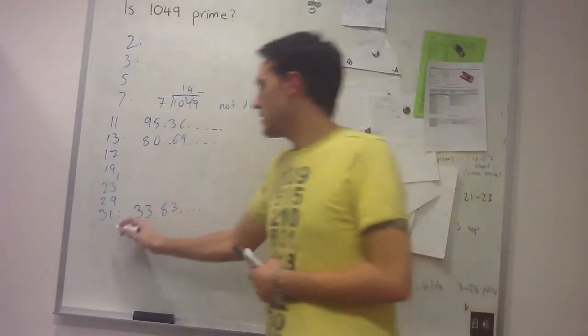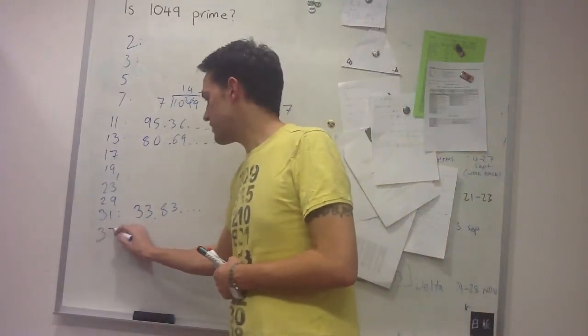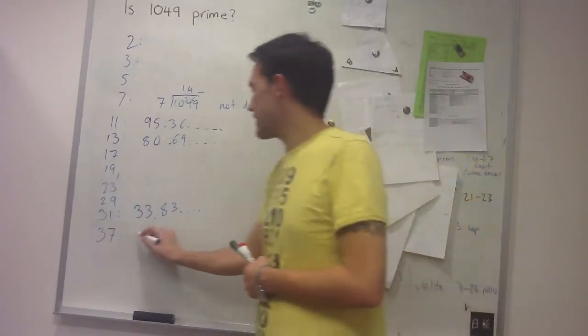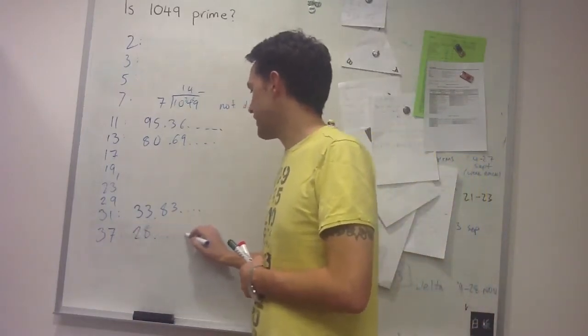And then now, I check 37, which is my next prime number, and I get 28 point something.